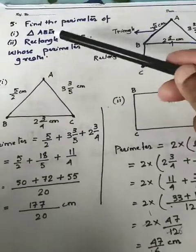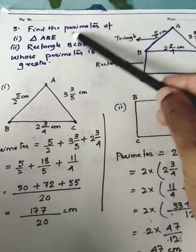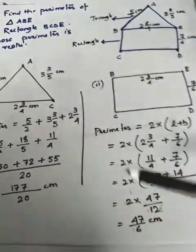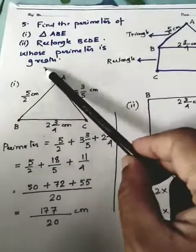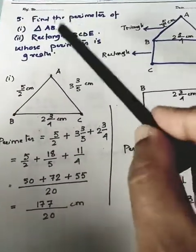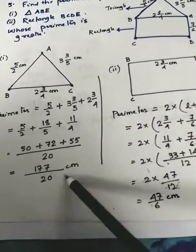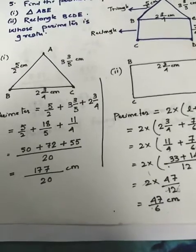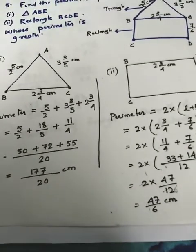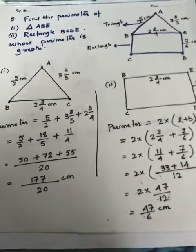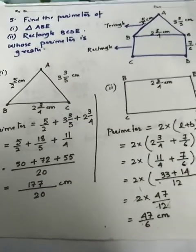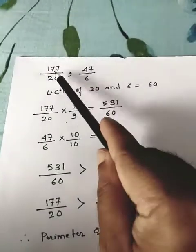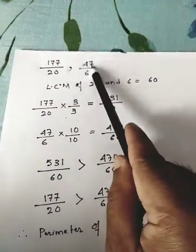So we are done. The perimeter of the triangle is 177/20 cm and the perimeter of the rectangle is 47/6 cm. The last part is to compare whose perimeter is greater. Since the denominators are different, we need to make them the same to determine which perimeter is larger.